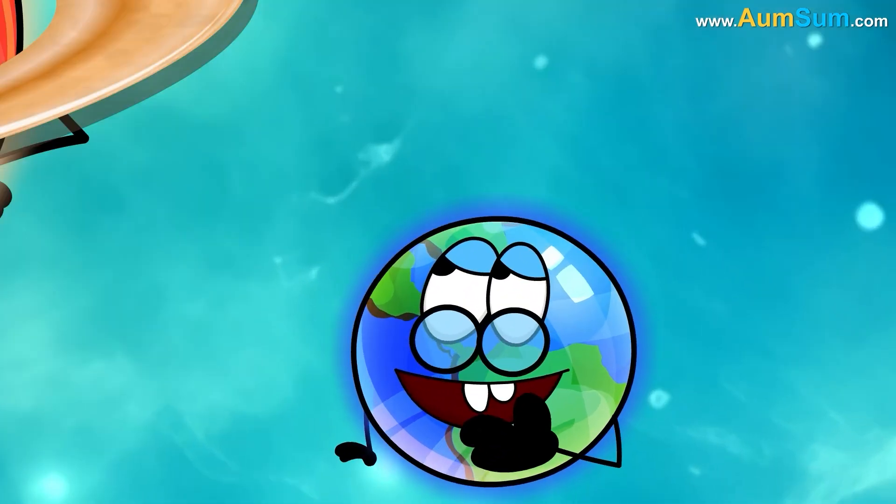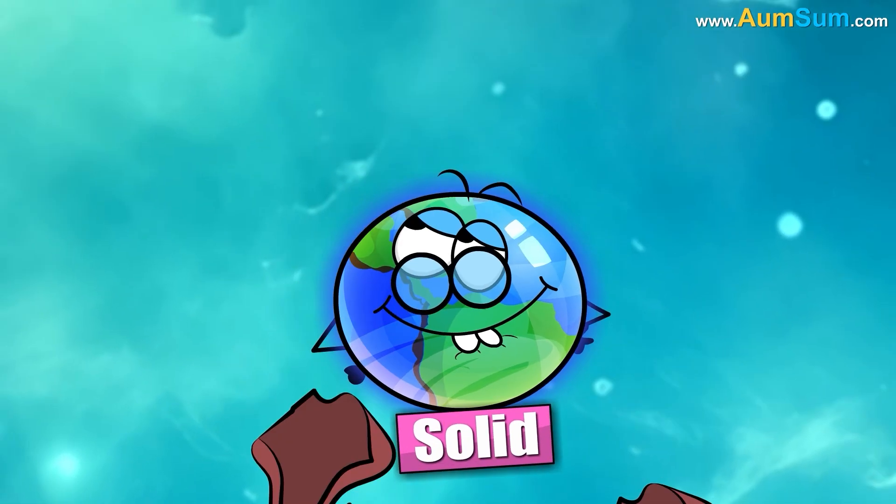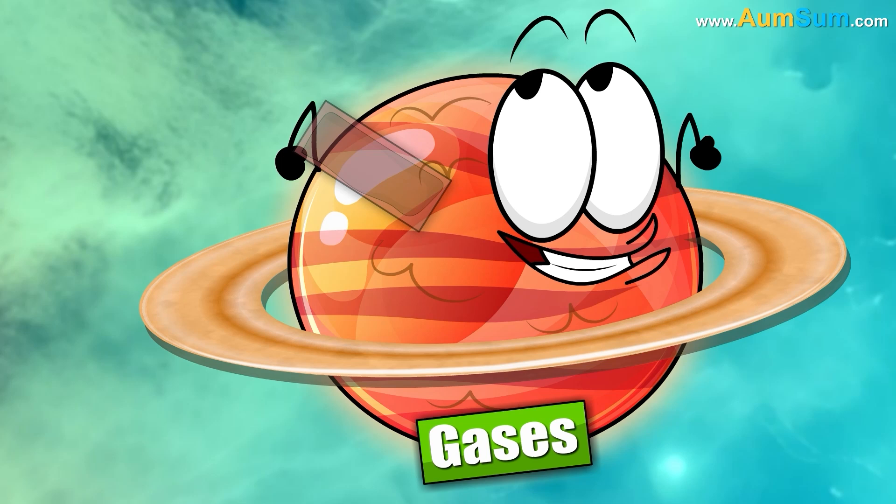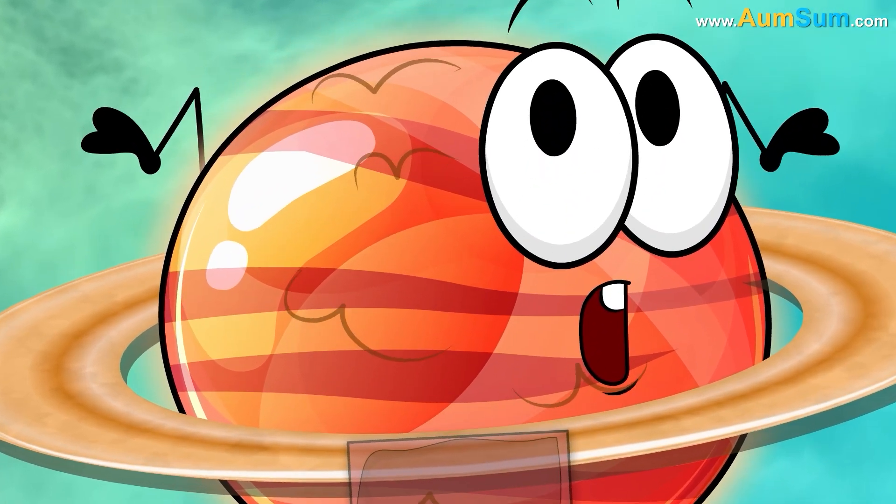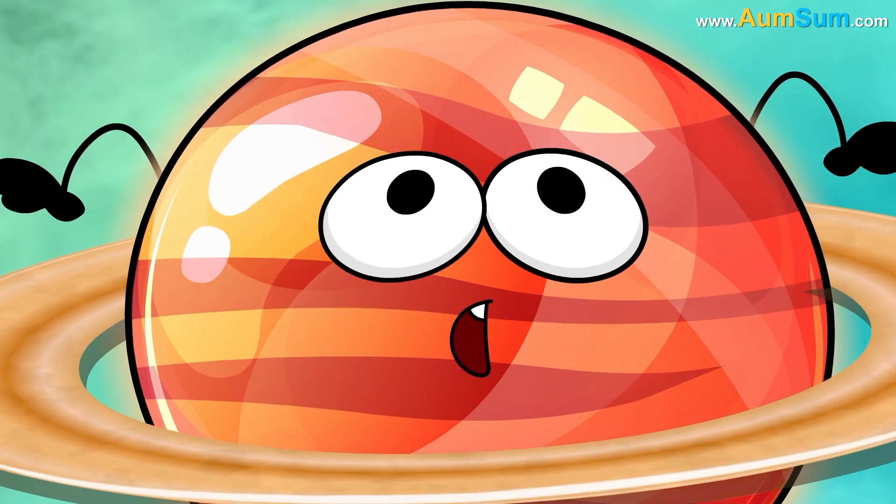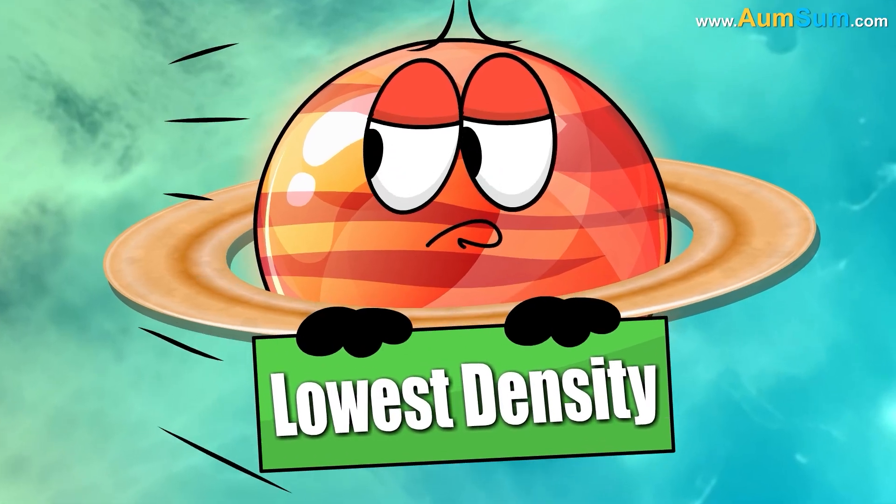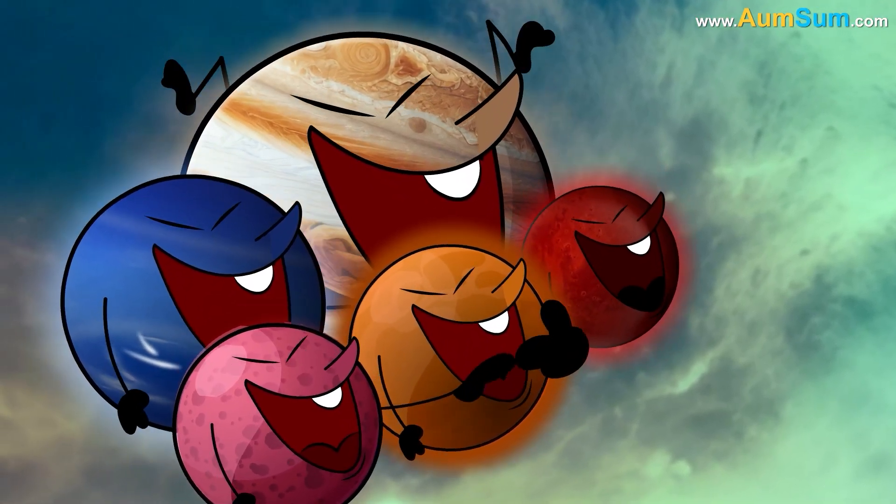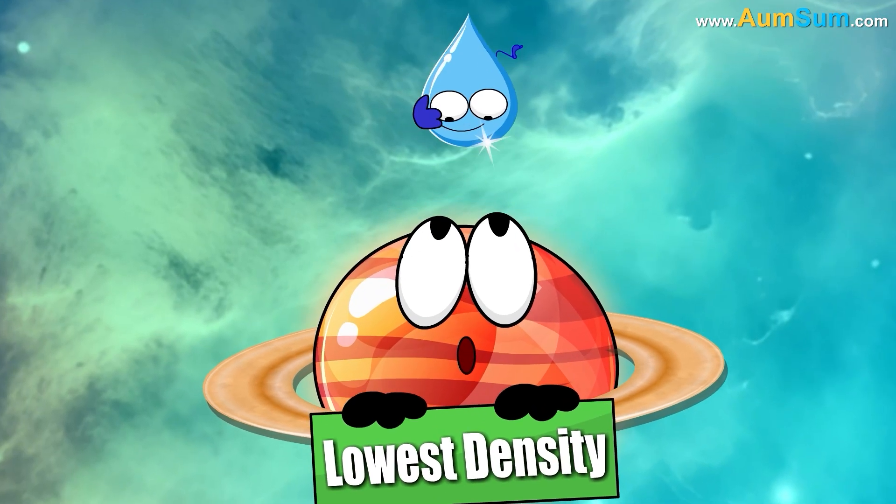This is because as compared to Earth, which is solid, Saturn is only made up of gases. This makes Saturn very light for its size. Actually, Saturn has the lowest density of all the planets in our solar system, even lower than the density of water.